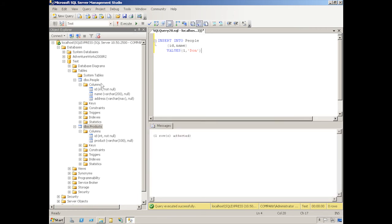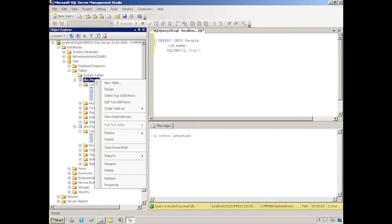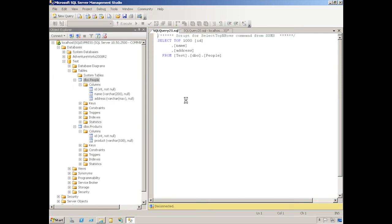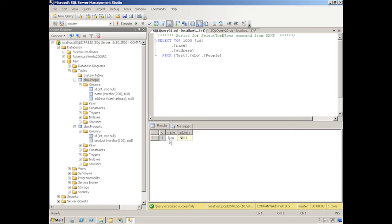Now, normally I would maybe quickly check that with a SELECT query just to make sure it worked, but just so you can kind of see this visually, let's select the top thousand rows and you can see that one and Don were inserted. Address contains a null value because I did not provide a value for it.